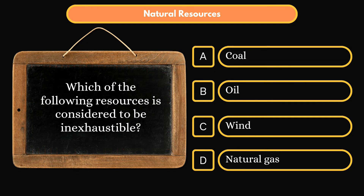Which of the following resources is considered to be inexhaustible? Option A: Coal. Option B: Oil. Option C: Wind. Option D: Natural Gas. Correct answer is Option C: Wind.